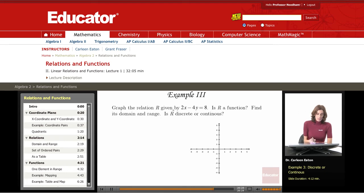Graph the relation given by 2x minus 4y equals 8. Let's go ahead and find some x and y values so we can graph this.